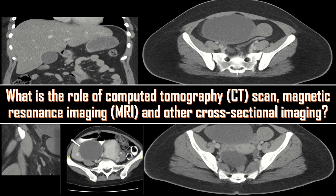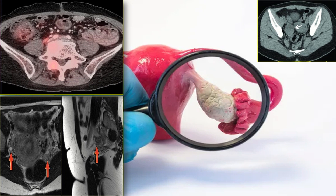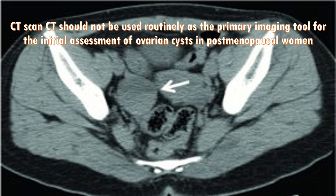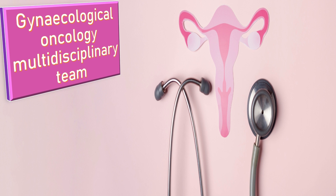What is the role of CT, MRI, and other cross-sectional imaging? CT, MRI, and PET scans are not recommended for initial assessment of ovarian cysts in postmenopausal women. CT should not be used routinely as a primary imaging tool due to its low sensitivity, limited assessment of ovarian internal morphology, and use of ionizing radiation. However, if malignant disease is suspected from clinical picture, ultrasonographic findings, or tumor markers, a CT scan of the abdomen and pelvis should be arranged with onward referral to gynecological oncology multidisciplinary team.